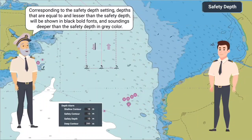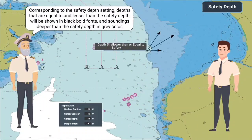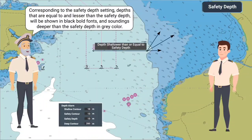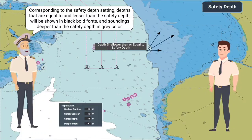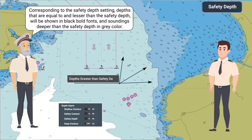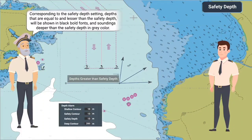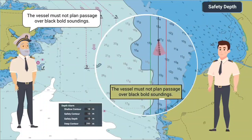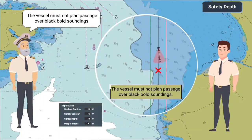Corresponding to the safety depth settings, depths that are equal to and lesser than the safety depth will be shown in black bold fonts, and soundings deeper than the safety depth in gray color. The vessel must not plan passage over black bold soundings.